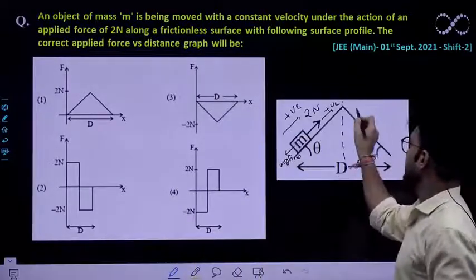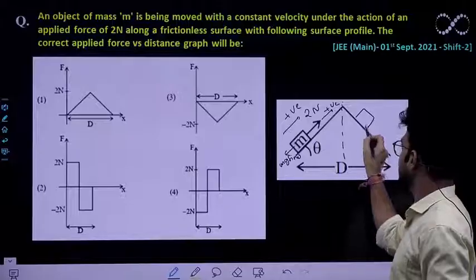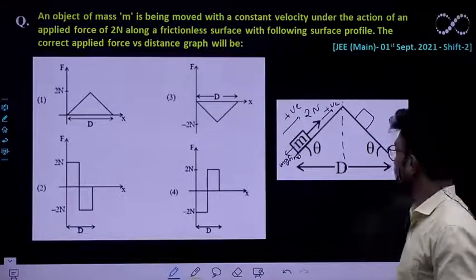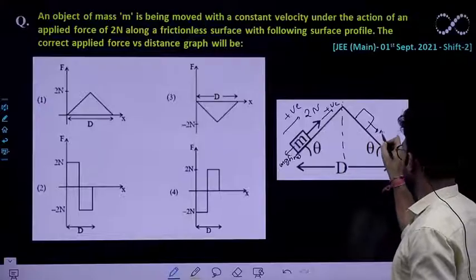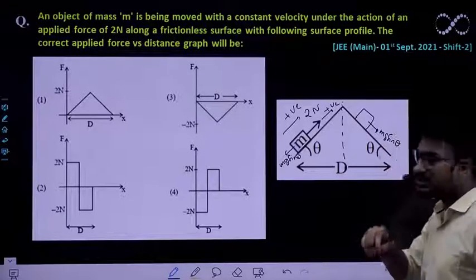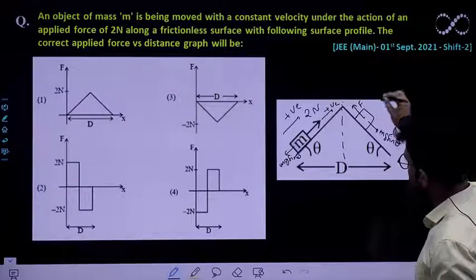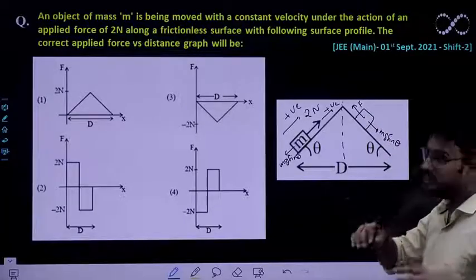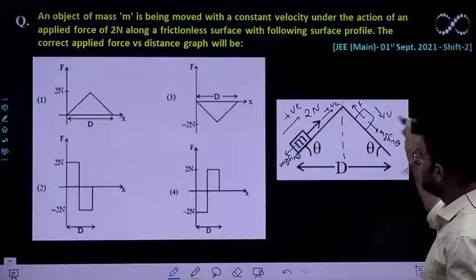Again while it is coming downward again it has to move with a constant velocity for which this component mg sin theta is acting downward. Now this force has to be applied in the backward direction. Why is it so? Then only the net force would be 0 then only it will move with a constant speed let it be V.